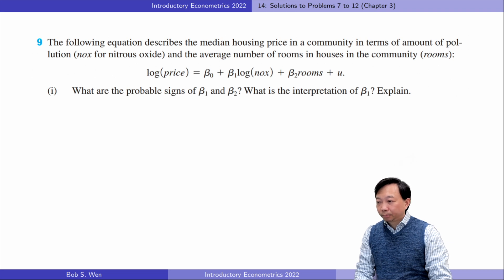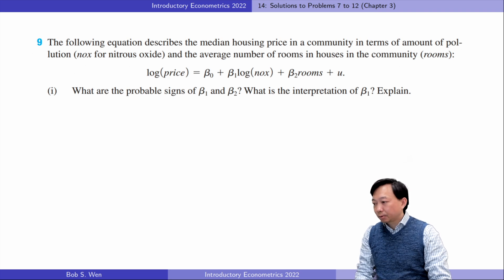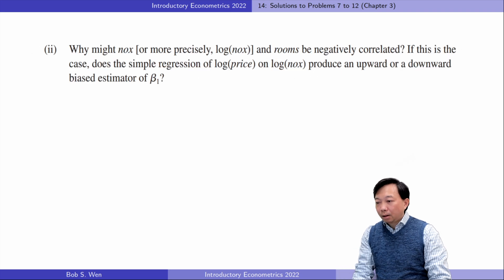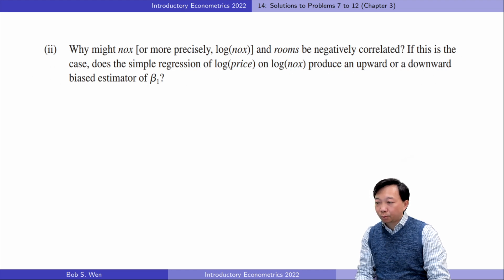For problem 9: the sign of beta 1 should be negative — more pollution lowers the housing price. The sign of beta 2 should be positive — more rooms in the house increase the value of the house. Beta 1 is the elasticity when both the outcome variable and expenditure variable are in log form, representing the percentage change in median housing price as pollution increases by one percent. Usually, rich people are not willing to buy houses in a place with a lot of pollution.